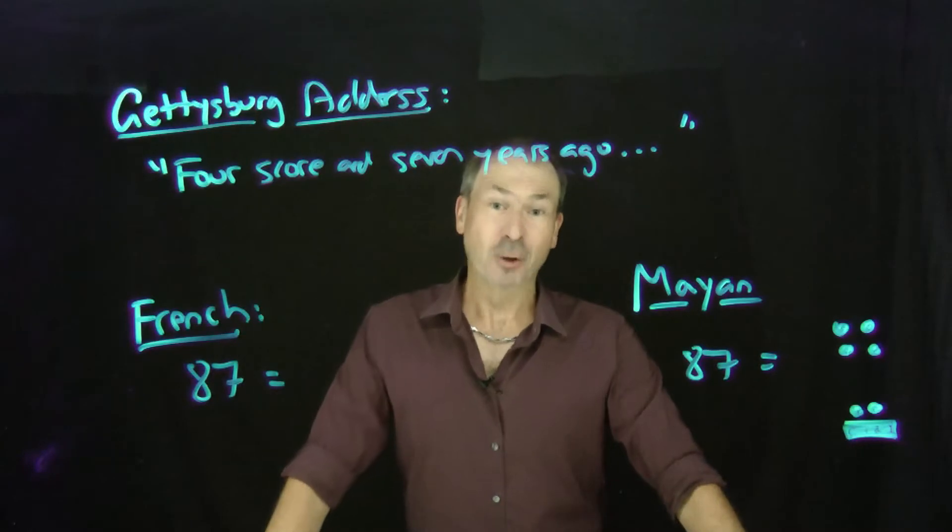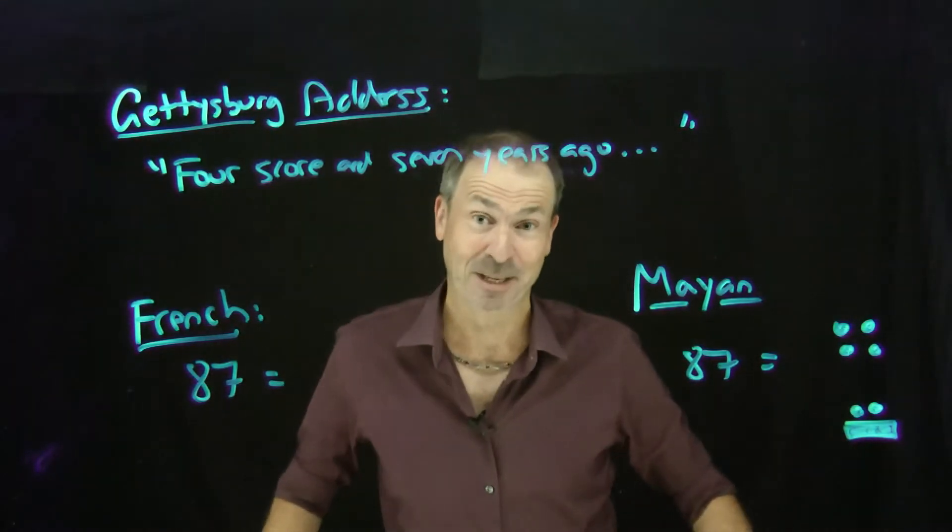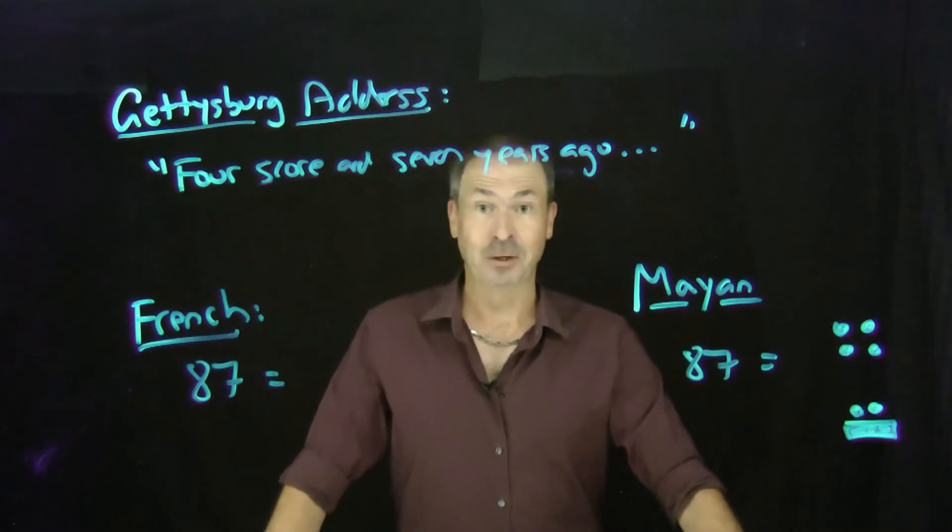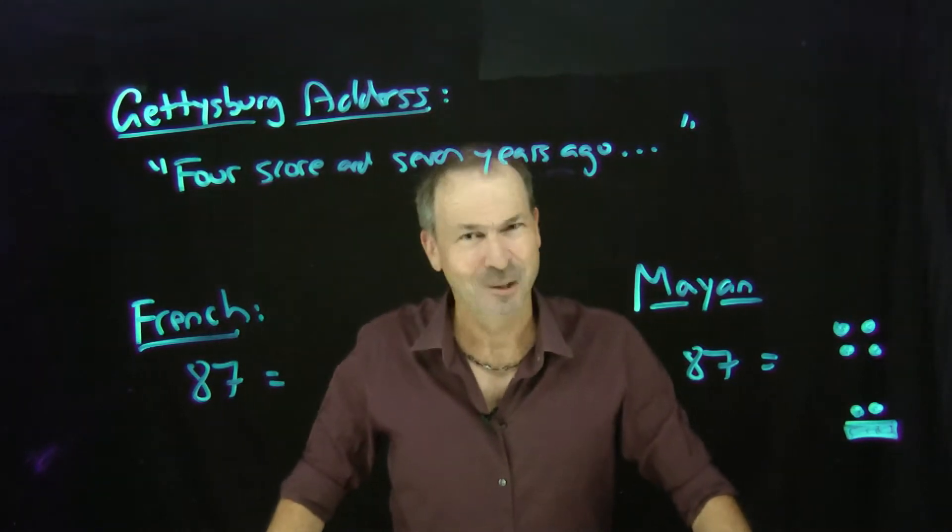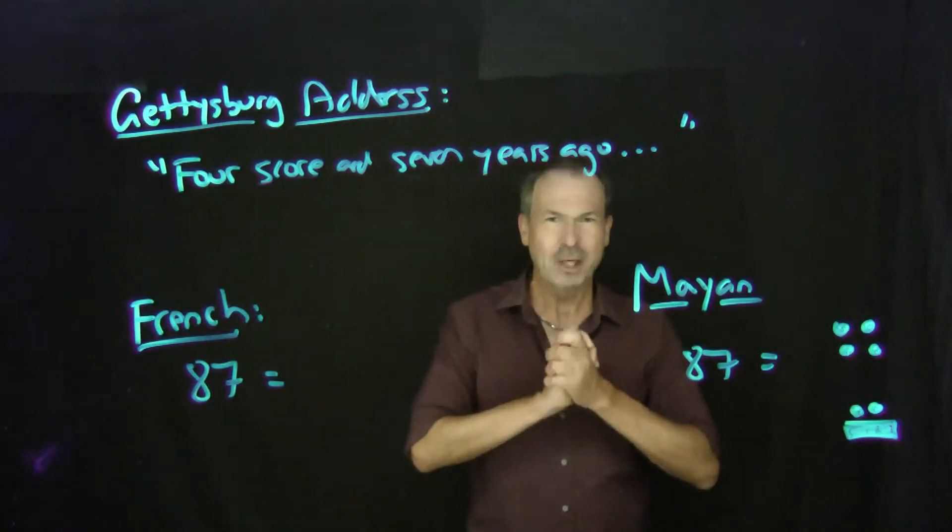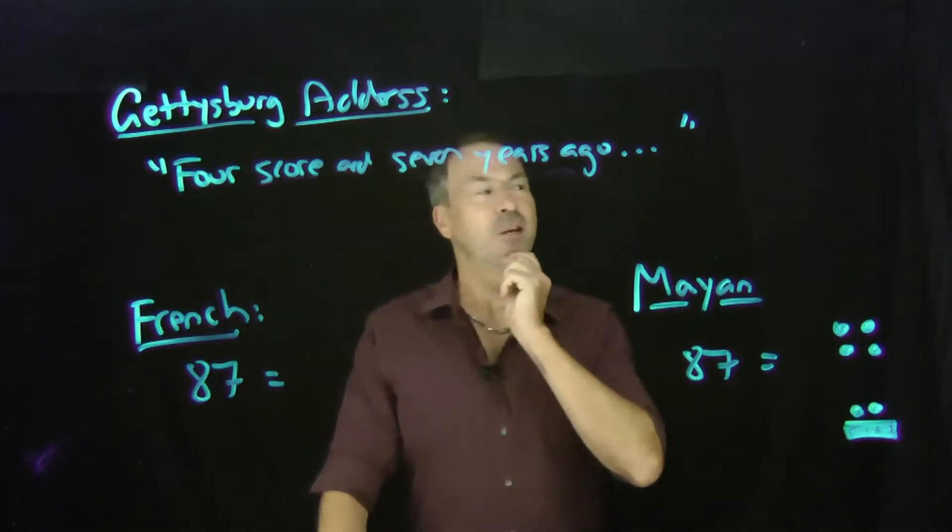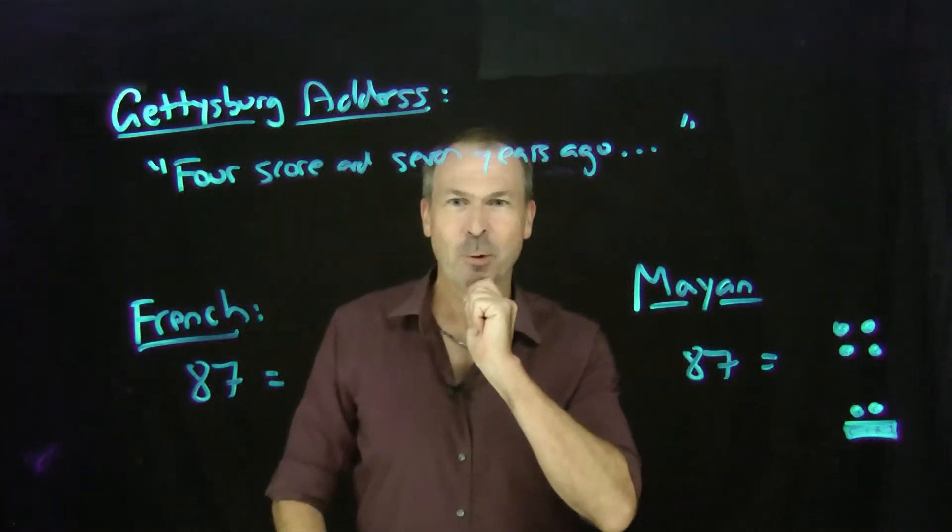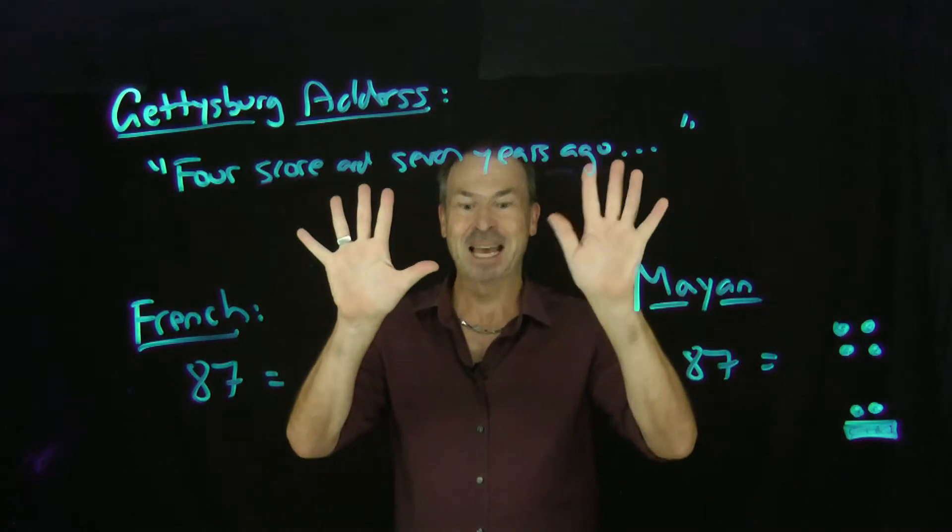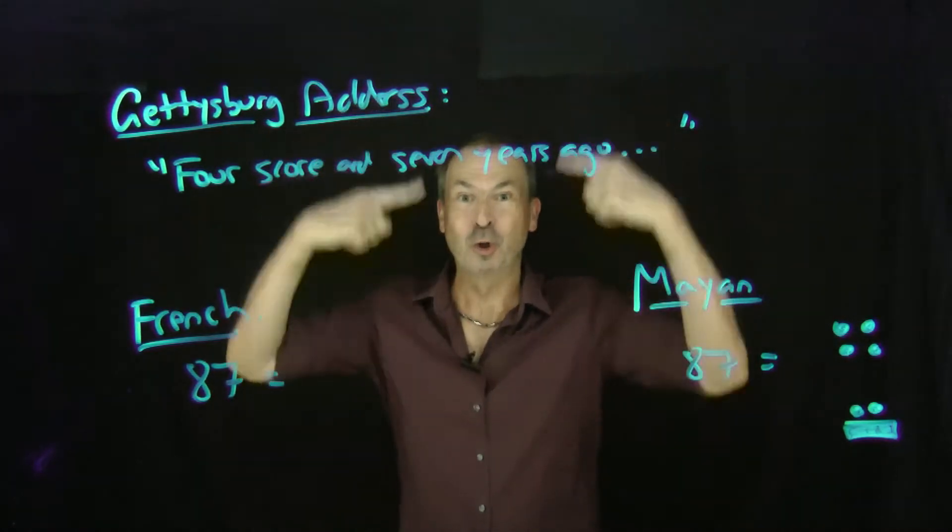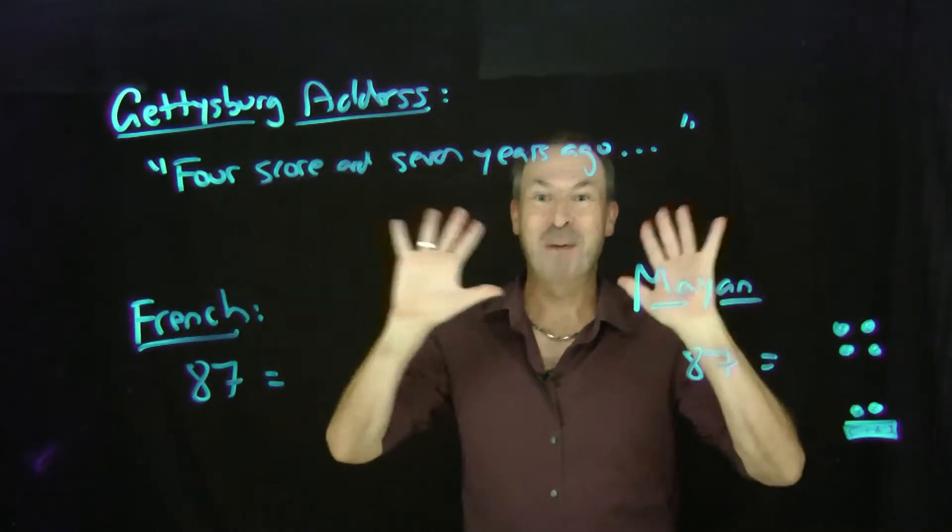I need to point out that not all cultures on Earth decide to use a base 10 number system. Some cultures decide to use base 20. Twenty, you think? That's a strange number. Why 20? You think about it for a while and then you realize, oh, maybe these people were thinking not just their fingers, they were thinking fingers and toes. All 20 digits on our human bodies, base 20.